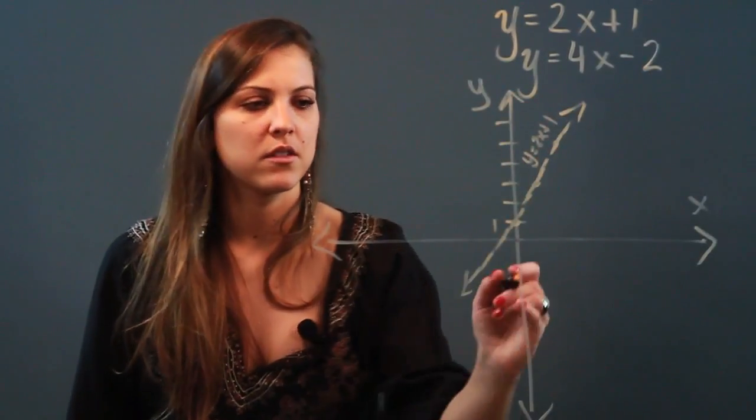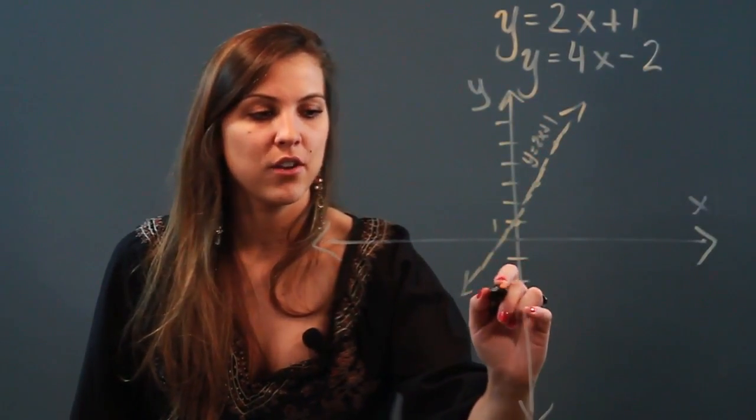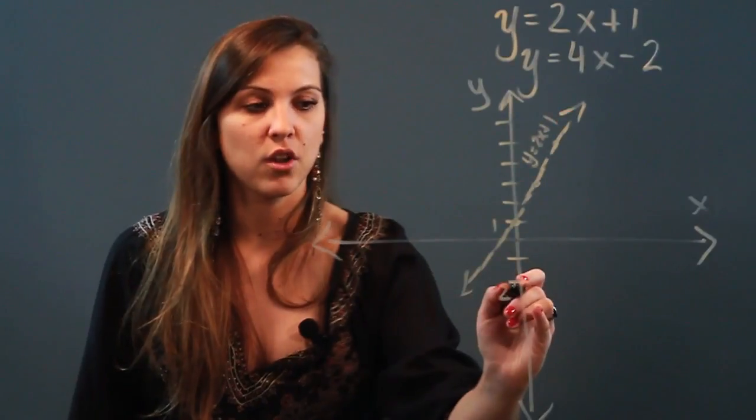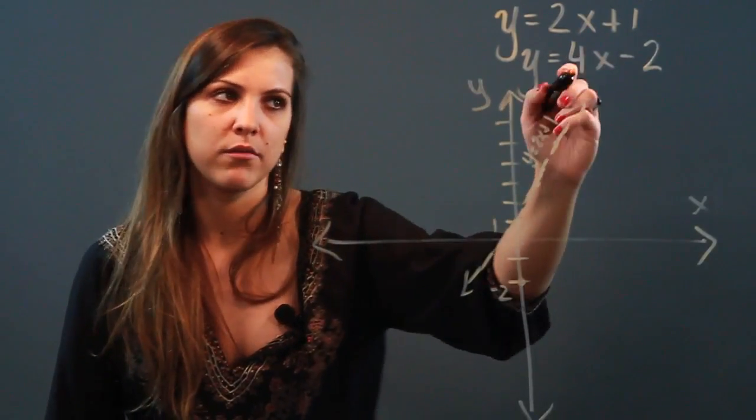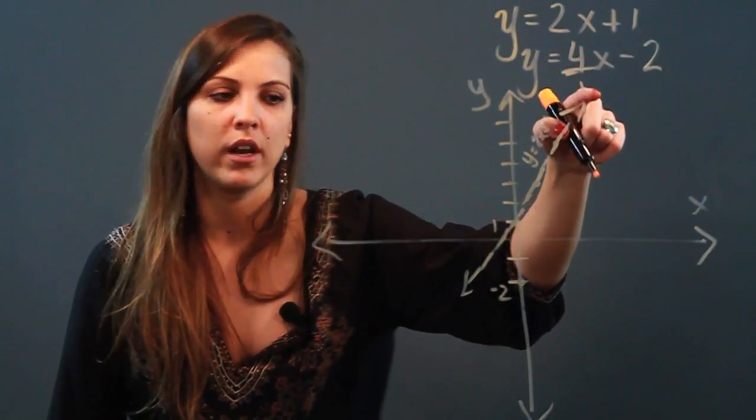Now let's do y equals 4x minus 2. My y intercept here is negative 2, so I'm going to start at negative 2. And now my slope is 4. So I can rewrite that as 4 over 1, right? So it's rising 4, running 1.